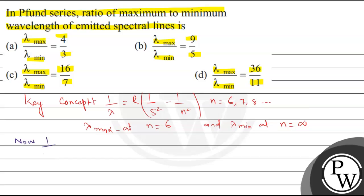One upon lambda max we write as R times one upon five squared, that is 25, minus one upon n squared maximum value one upon six squared. Six squared equals 36, so that implies lambda max equals 25 times 36 upon 36 minus 25, which is 11.